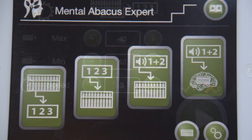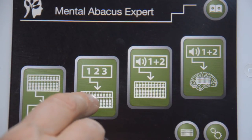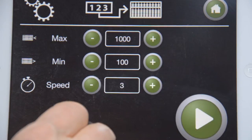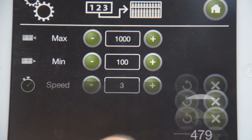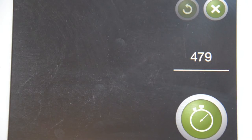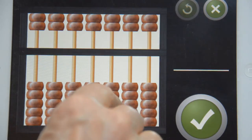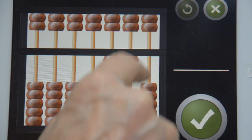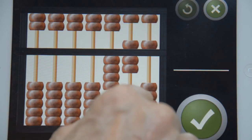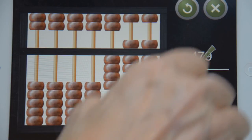The next exercise is the reverse, fast reading of numbers and turning them into abacus figures. 479 and that was correct.